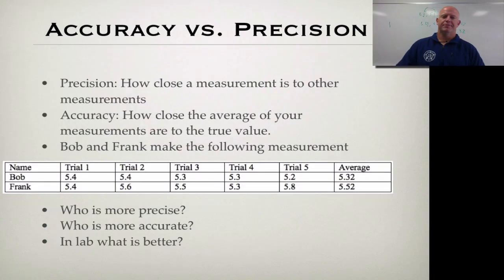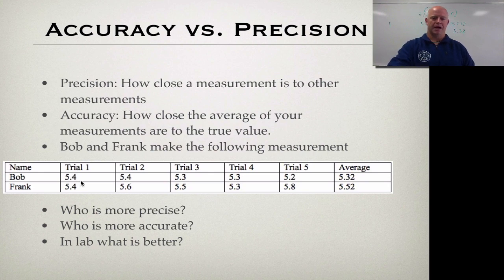Okay, so an example for us to work with is if we take a look, we have Bob here and we have Frank. And Bob and Frank both made measurements, and there's their five trials, and there's their averages. They both measured to the same precision in terms of which decimal they measured to, but let's take a look at their range and see who's more precise. So who's more precise here? Let's see, Frank goes from, looks like a 5.3 all the way to a 5.8, and Bob is from a 5.2 to a 5.4. So because Bob's range is smaller, even though they measured to the same decimal, since Bob's range is smaller, Bob is more precise here.